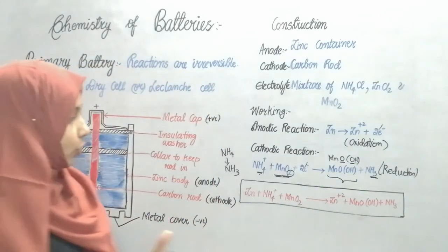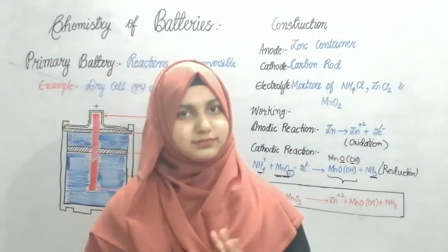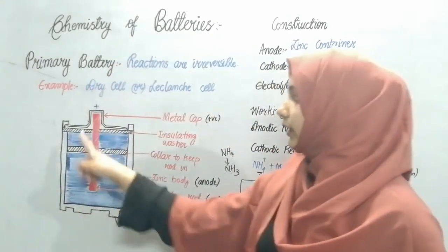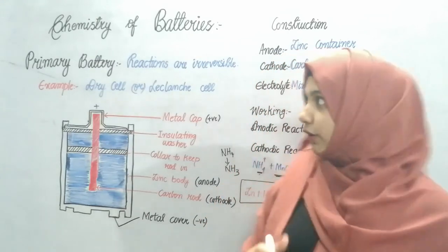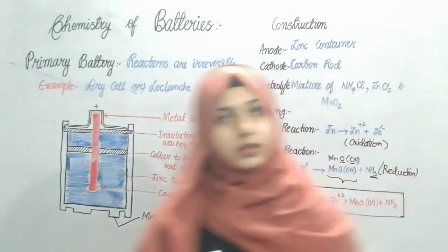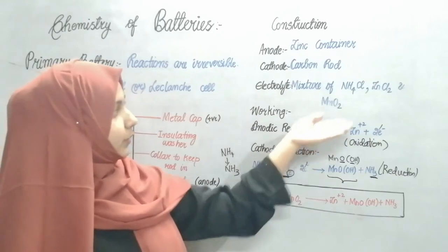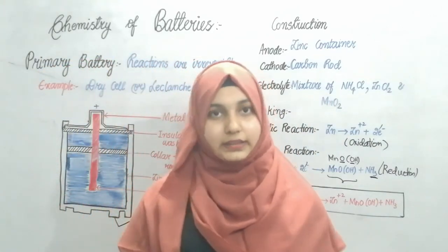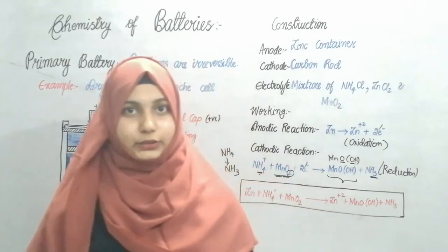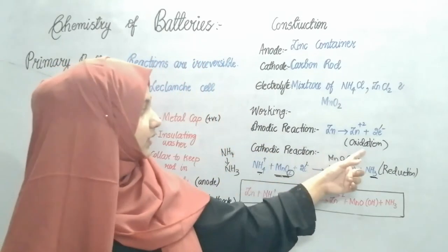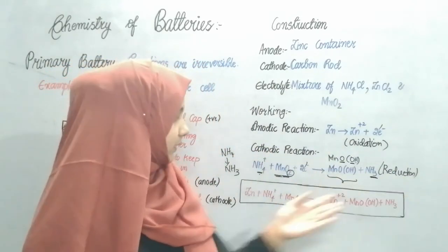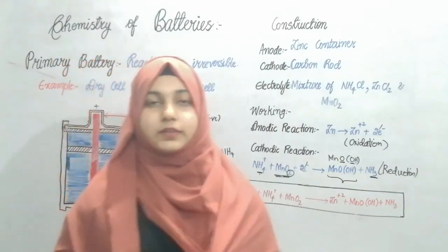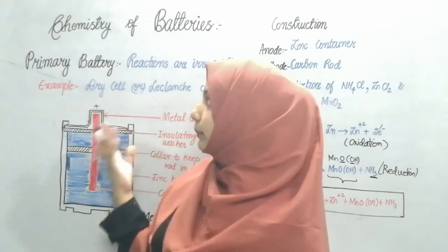To summarize: you have a zinc container acting as the anode, a mixture of ammonium chloride, zinc chloride, and manganese oxide acting as the electrolyte, and a carbon rod acting as the cathode. Oxidation takes place at the anode, reduction takes place at the cathode, and this is the overall chemical reaction.